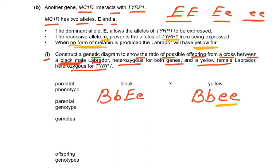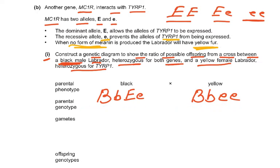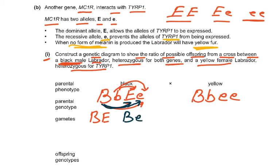The parental phenotype was black, and the parental genotype is big B small B, big E small E. For gametes, the male parent produces four gametes: big B big E, big B small E, small B big E, and small B small E. These will be the four genotypes for the male parent.